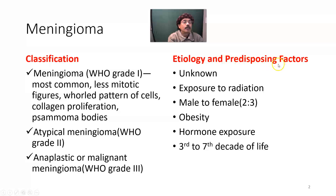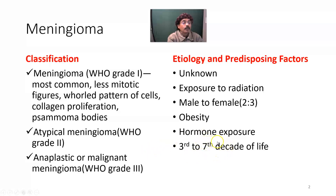Regarding etiology and predisposing factors, we don't know the exact cause of meningioma. Possible causes include some type of mutation and exposure to radiation. The male to female ratio is 2 to 3, meaning it is more common in females. Obesity may be a factor. Hormone exposure is significant — it is more common in females, and postmenopausal women who take HRT (hormone replacement therapy) have a higher chance of developing meningioma. It typically occurs in the third to seventh decade of life, though it may happen at any age.